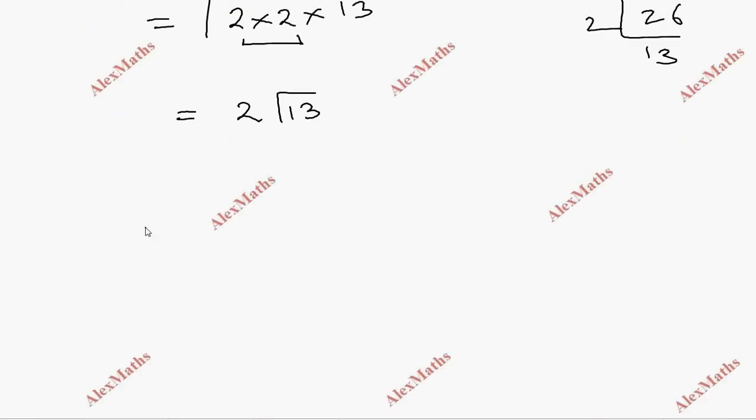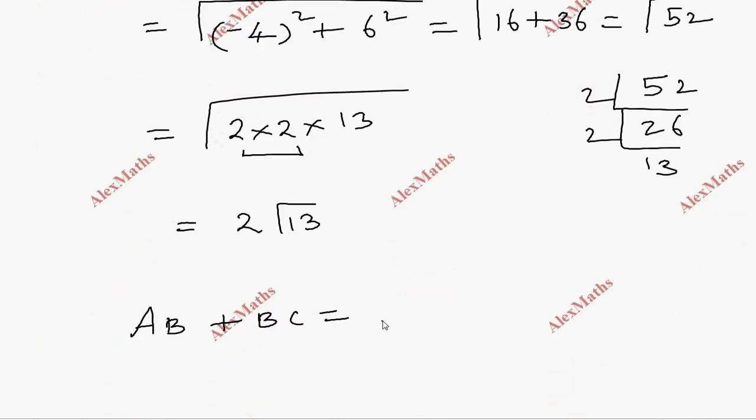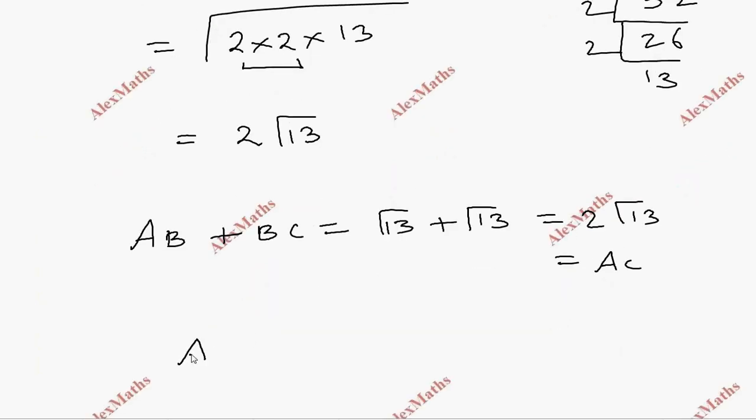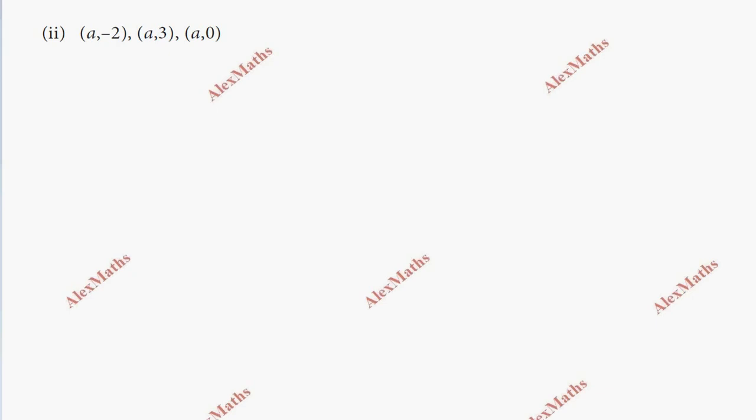AB plus BC, AB is root 13, BC is root 13, so root 13 plus root 13, which is nothing but AC, that's 2 root 13. AB plus BC equal to AC. So the points are collinear.